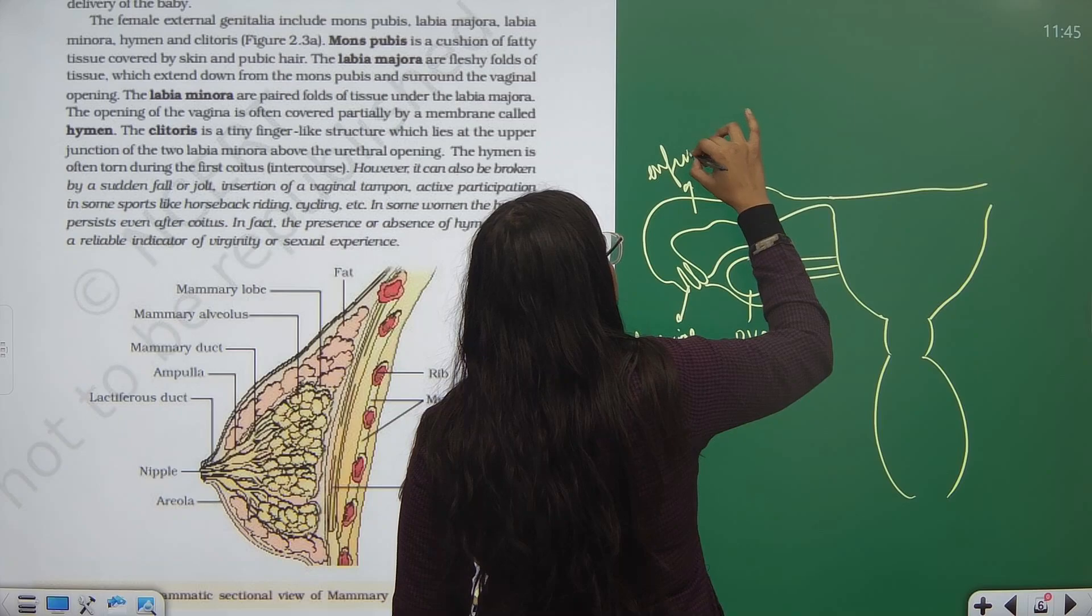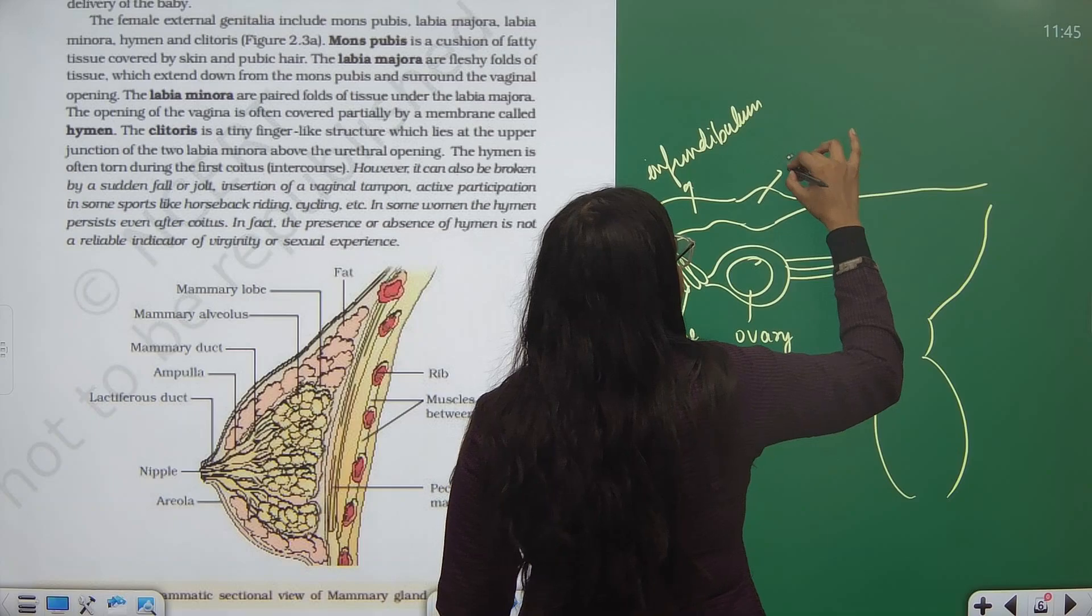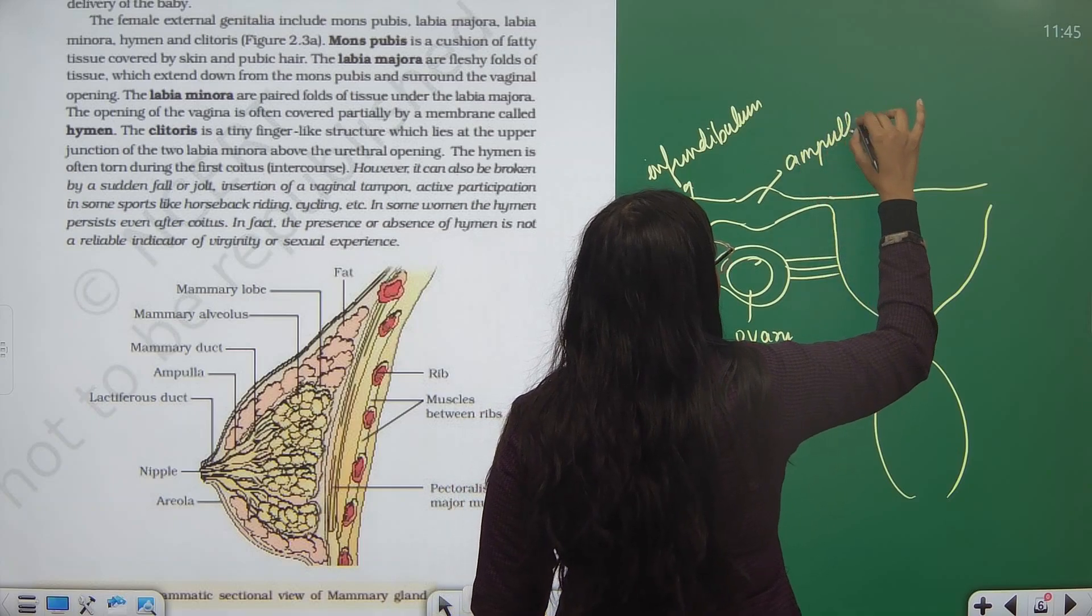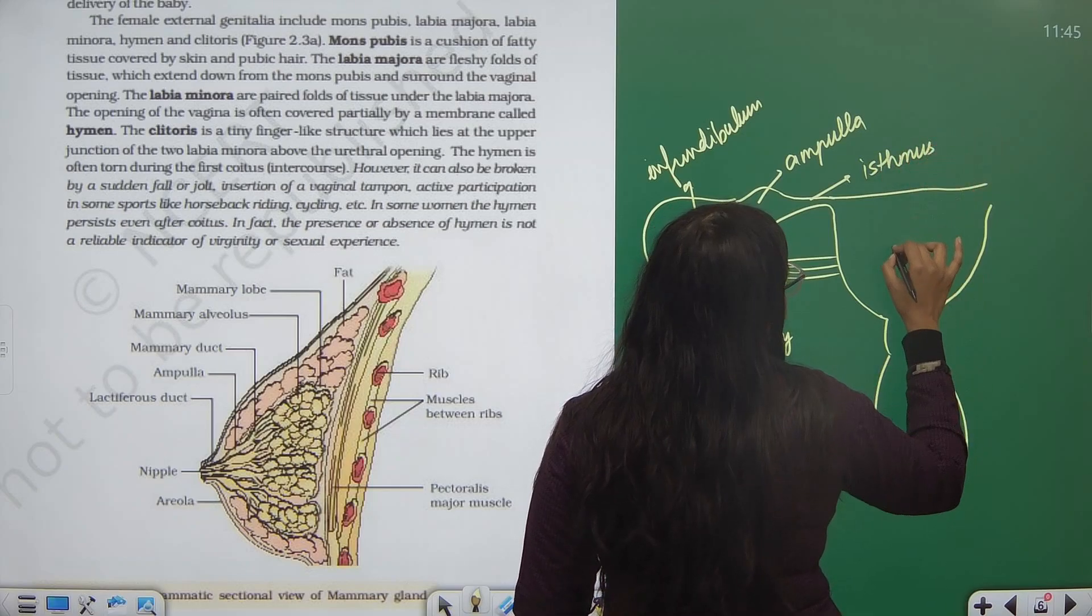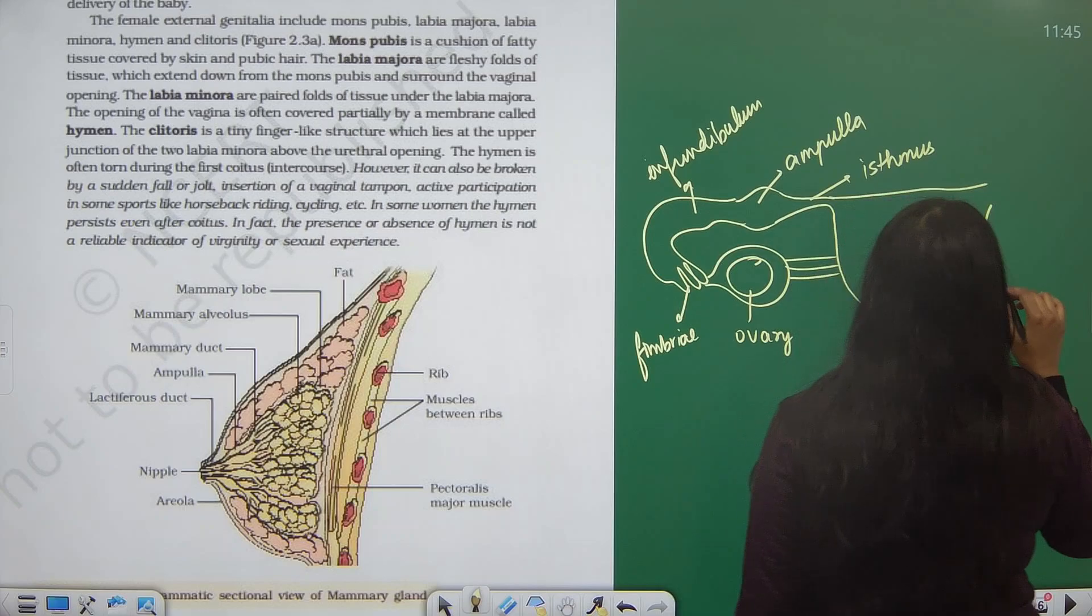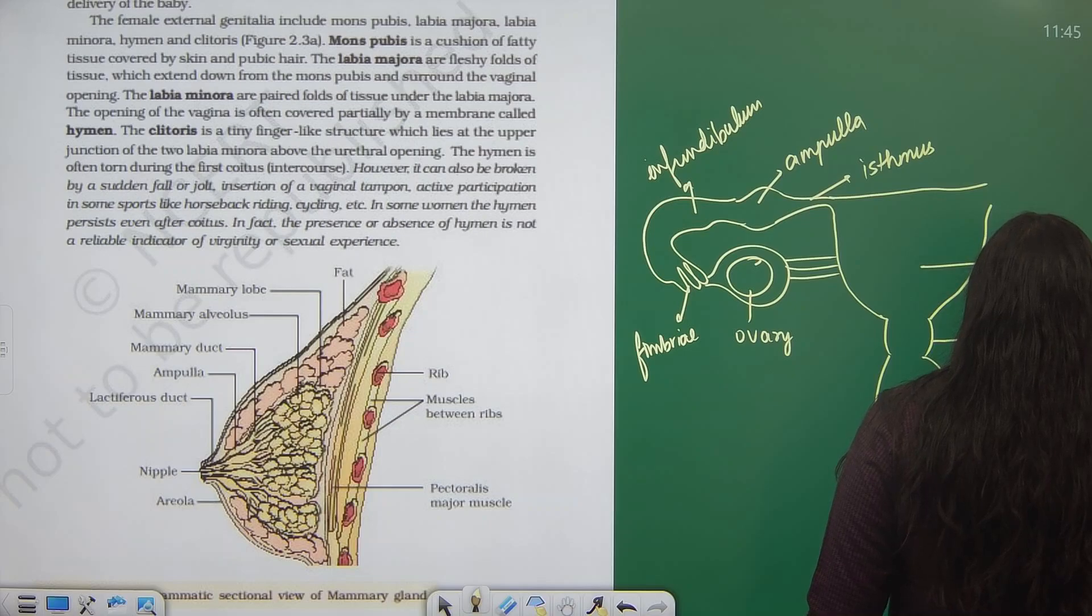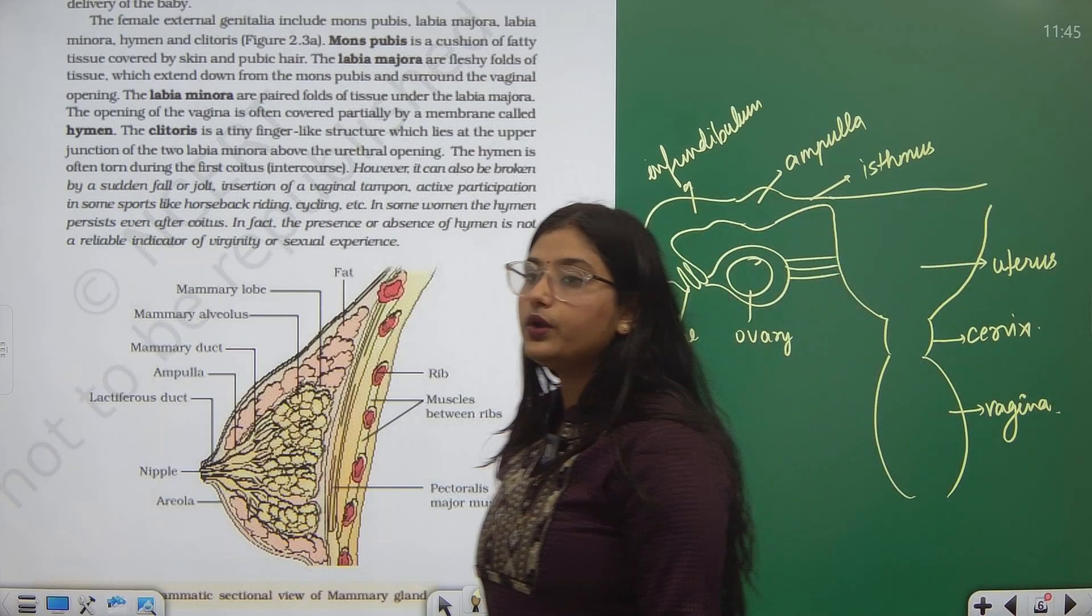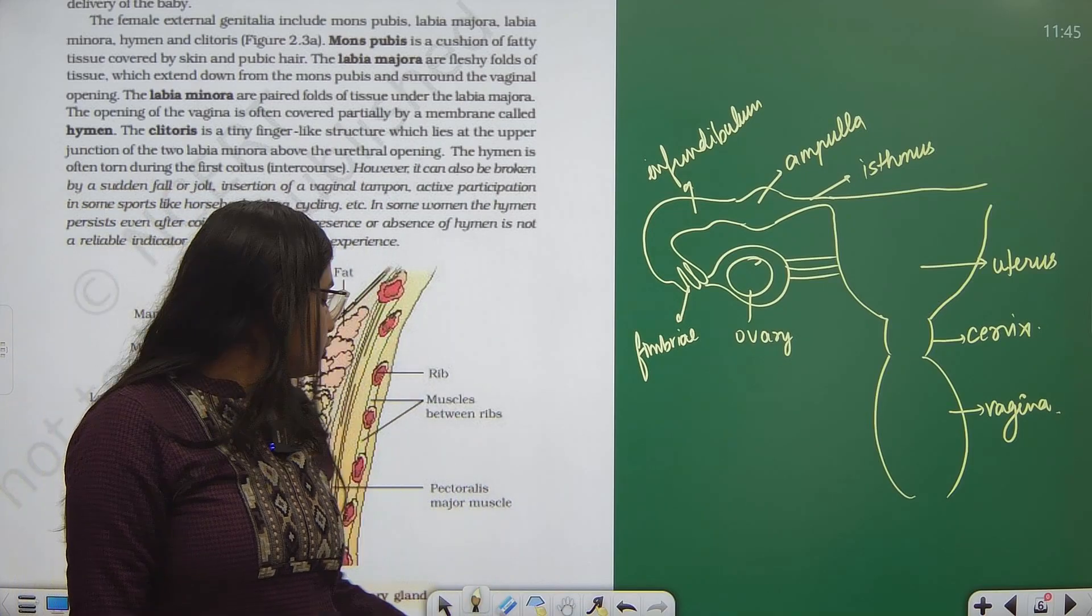The first part, this is ampulla and this is isthmus. Inside we have uterus attached as cervix. Cervix opens up into vagina. These are the basic parts which we had covered.